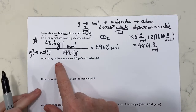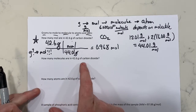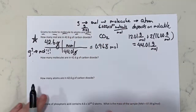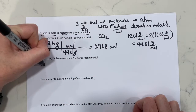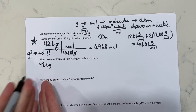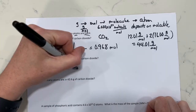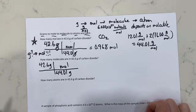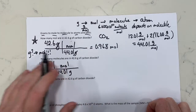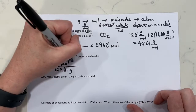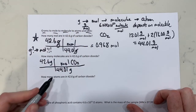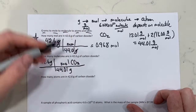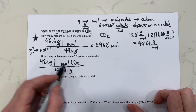The next question is how many molecules are in 42.6 grams of carbon dioxide? We already went from grams to moles. Now we need to go to molecules. Starting again with 42.6 grams — what do we do when we have grams? We immediately turn it into moles. We put the molar mass in the denominator: 44.01 grams of CO₂ per mole of CO₂.